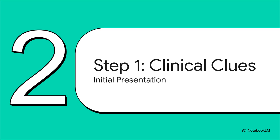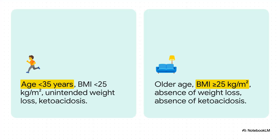Here you can see those classic pictures side by side. On one hand, you have the features that scream type 1: younger age, lower BMI, that unintended weight loss, and of course ketoacidosis. On the other hand, the more typical presentation for type 2. The real challenge — and the whole reason this algorithm exists — is that we're seeing more and more patients who have a mix of features from both columns.